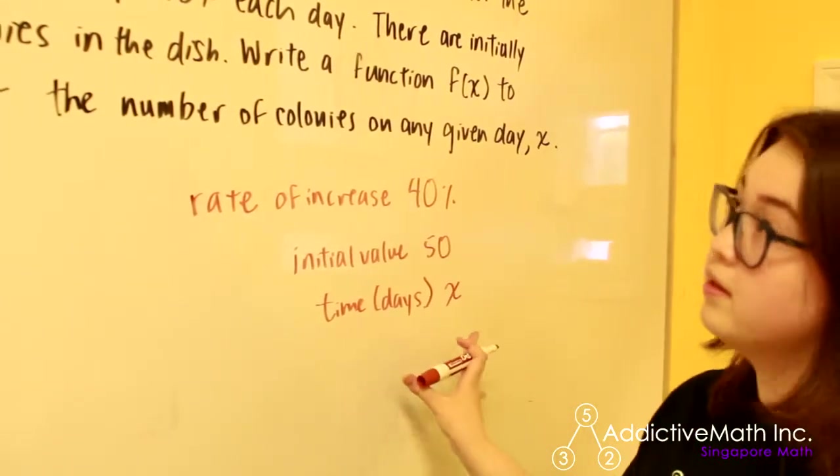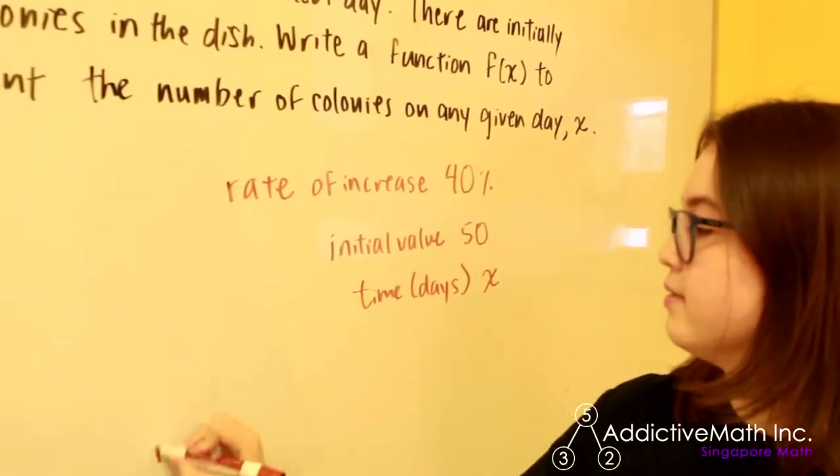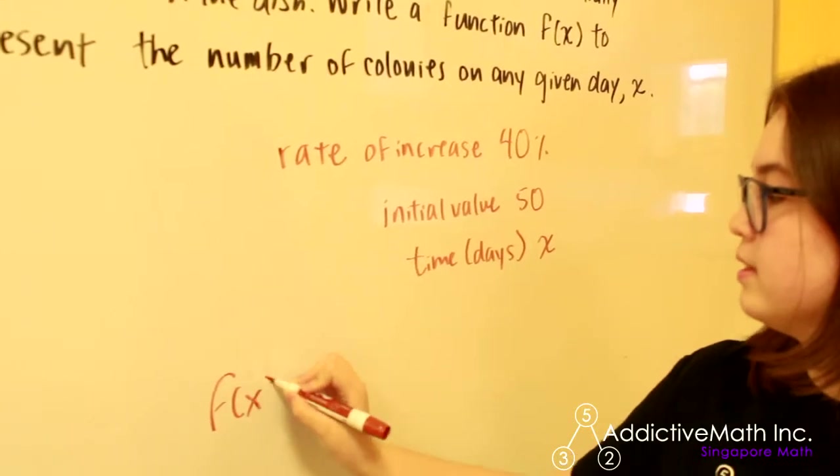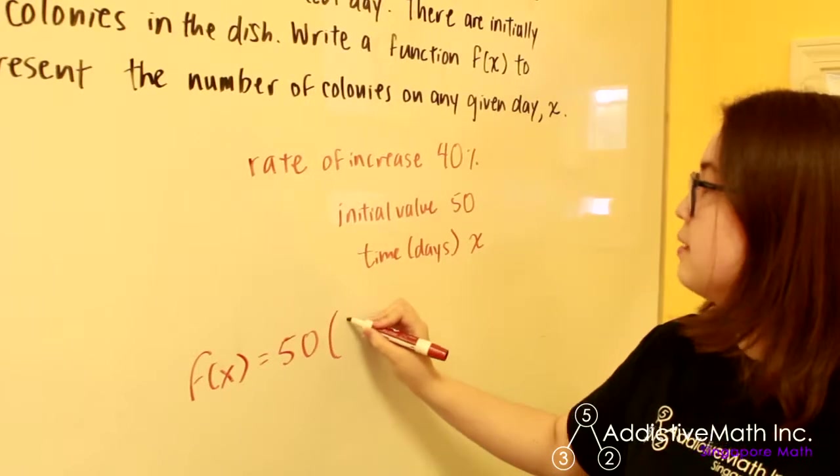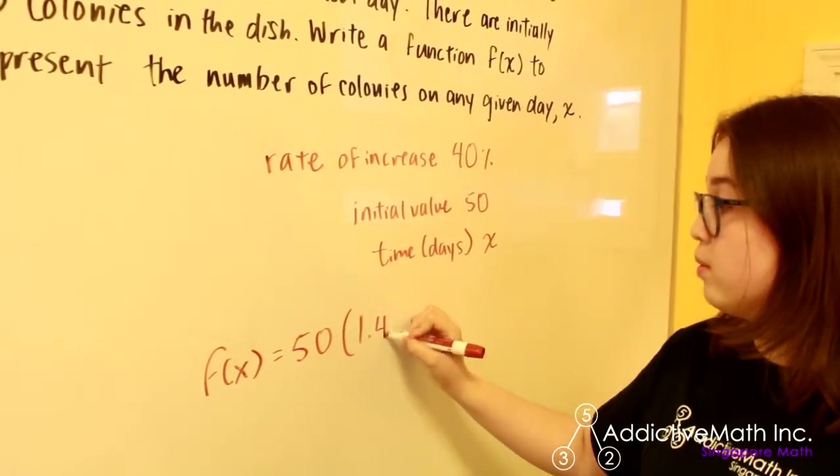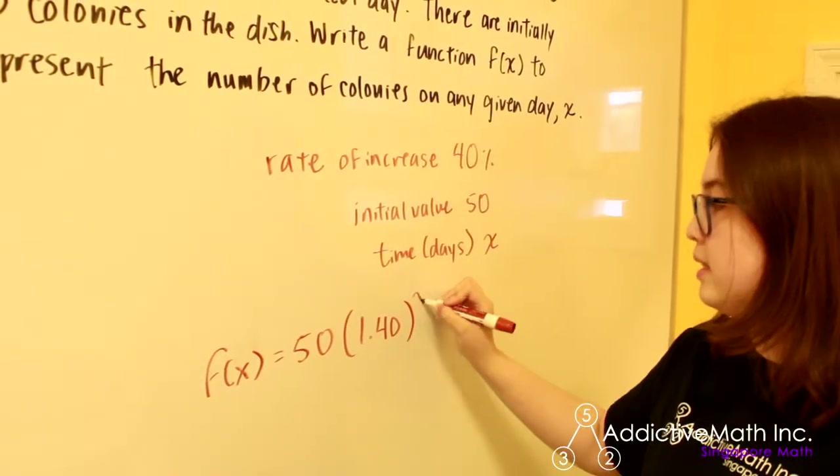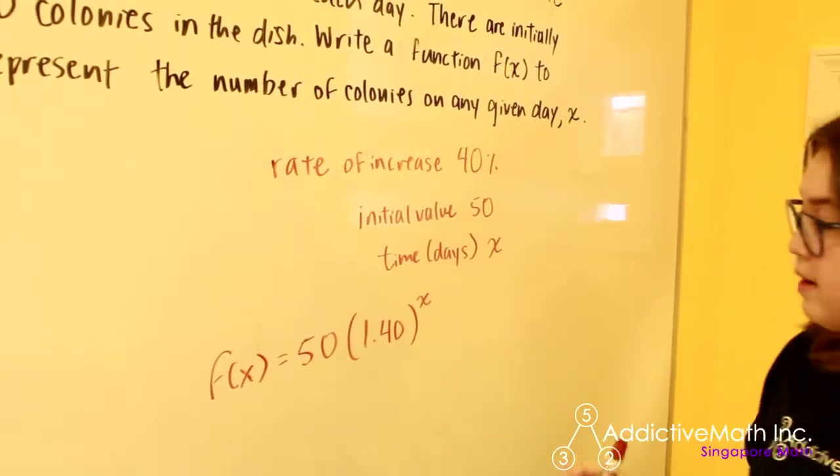The way that we're going to represent this as a function is we're going to write out our f(x) is the initial value times 1.40, and I'll explain that in a moment, to the x power.